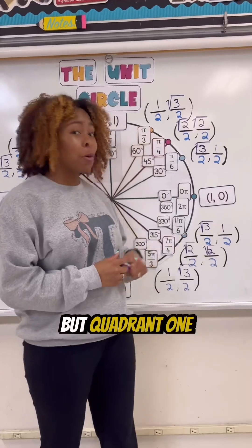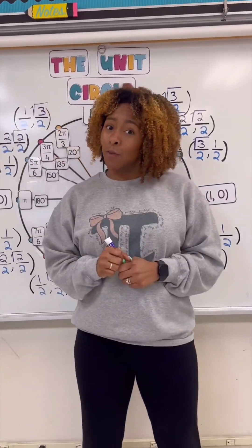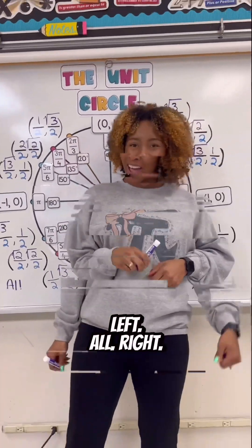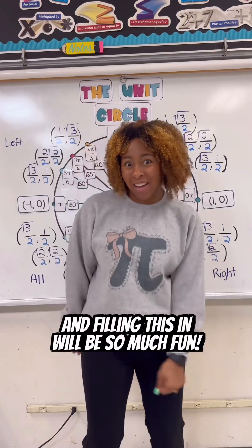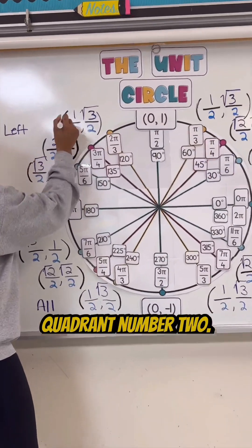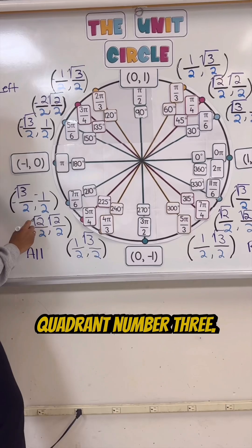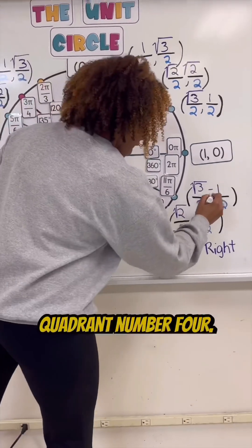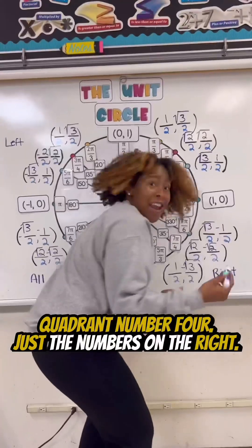But quadrant one is all done. Just follow this rule: left, all right. And filling this in will be so much fun. Quadrant number two — the numbers on the left. Quadrant number three — that's all. Quadrant number four — just the numbers on the right. And now we have them all.